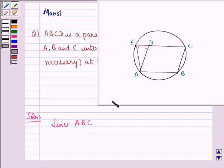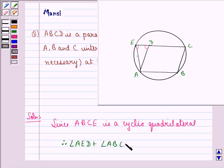Since ABCE is a cyclic quadrilateral, we can say that angle AED plus angle ABC equals 180 degrees. We call this one.